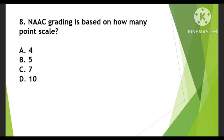Next question: NAAC grading is based on how many points scale? Options are 4, 5, 7, or 10. NAAC's grading system works as follows: A++ is 3.51 to 4, A+ is 3 to 3.5, B++ is 2.51 to 3, and so on, with the maximum being 4. So NAAC grading is based on a 4-point scale. The right answer is 4.